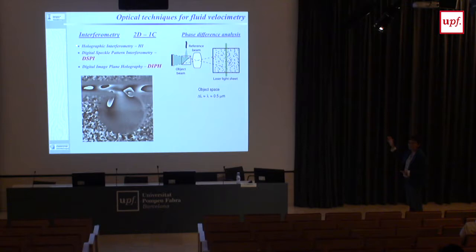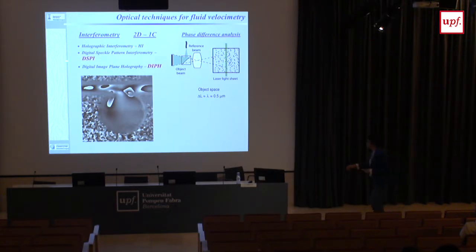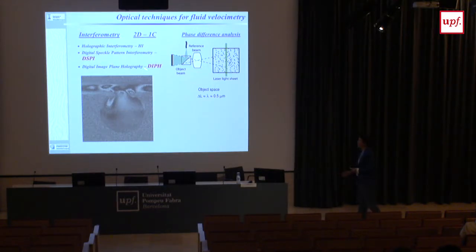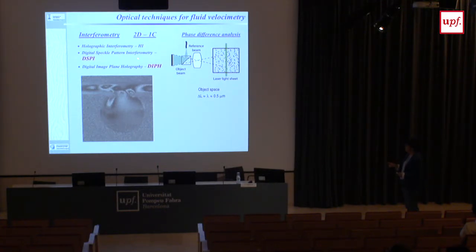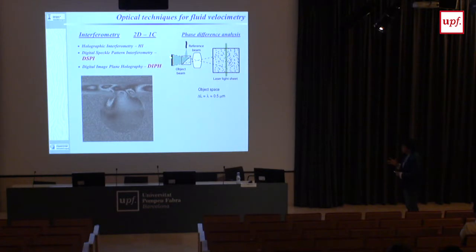This subtraction could even be done analogically with electronics, and the output was something similar to fringe patterns where the color tells you the phase. Then they started to use spatial phase shifting — by placing the reference beam at a certain angle, a modulation is introduced so that from three adjacent pixels you can extract the phase at each point. This gives cleaner phase maps. Eventually the technique could provide not only phase but also intensity — similar to particle image velocimetry but with a bit more noise — so it was called digital holographic PIV. This is the name we use because we were the ones who proposed Digital Speckle Pattern Interferometry for fluid velocimetry; it had been used for solid deformation but never for fluid velocity.